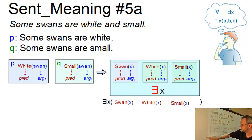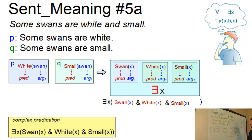And this time, it seems suitable to link them by and so that we get, as a final result, the complex predication which can be read as follows. Suppose there is at least one element x such that x is a swan and x is white and x is small. And this is the solution to our first sentence.